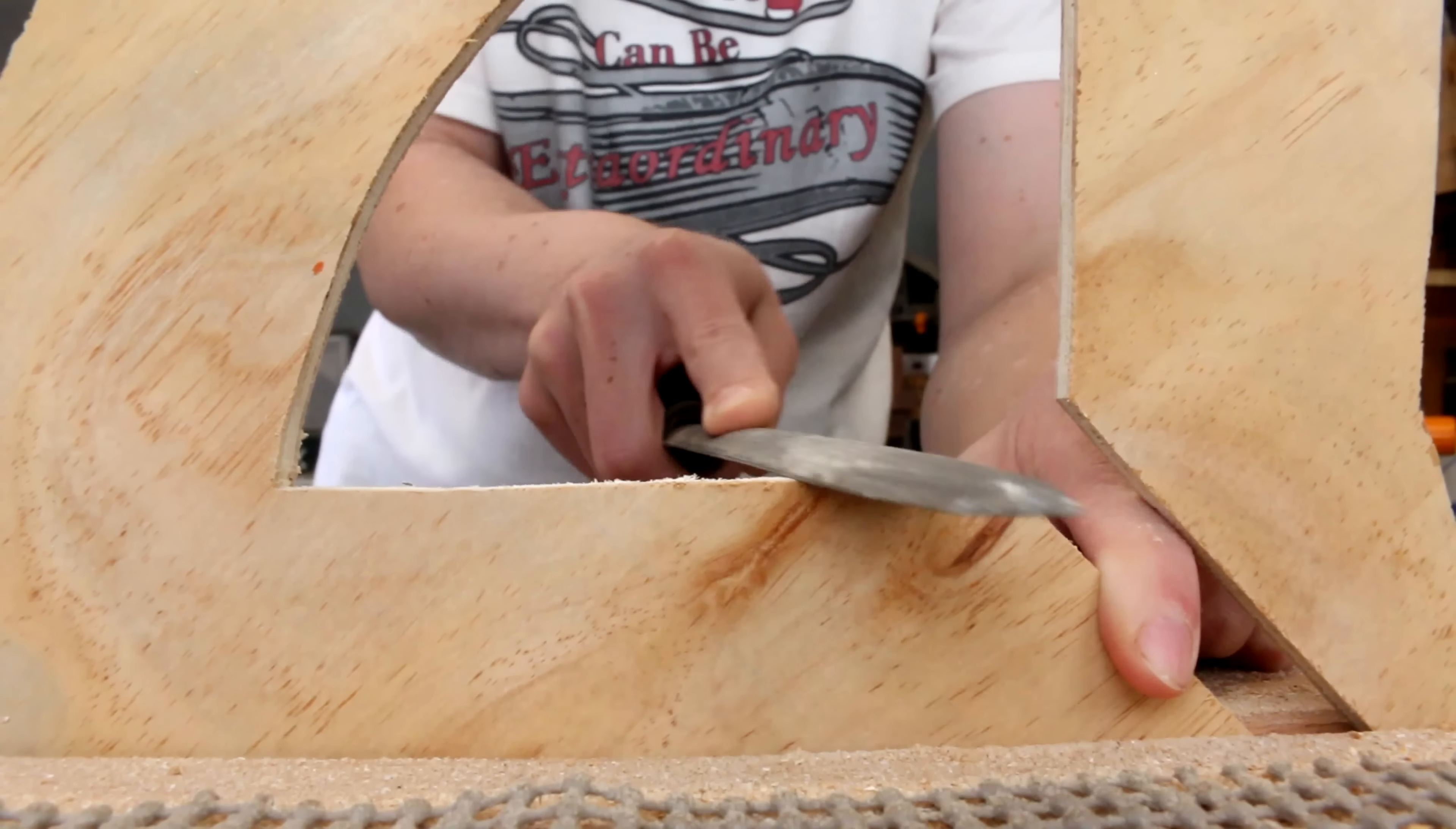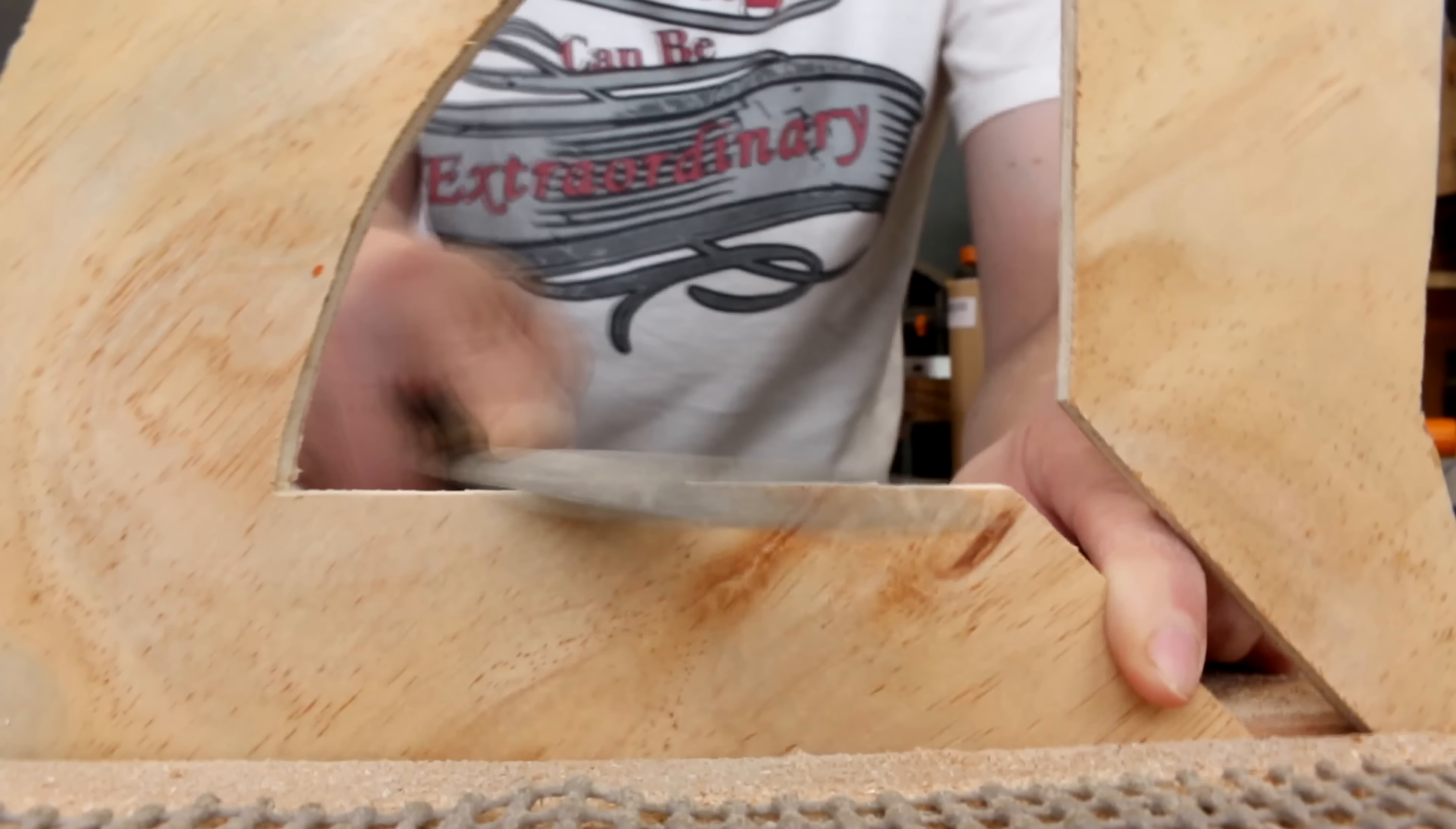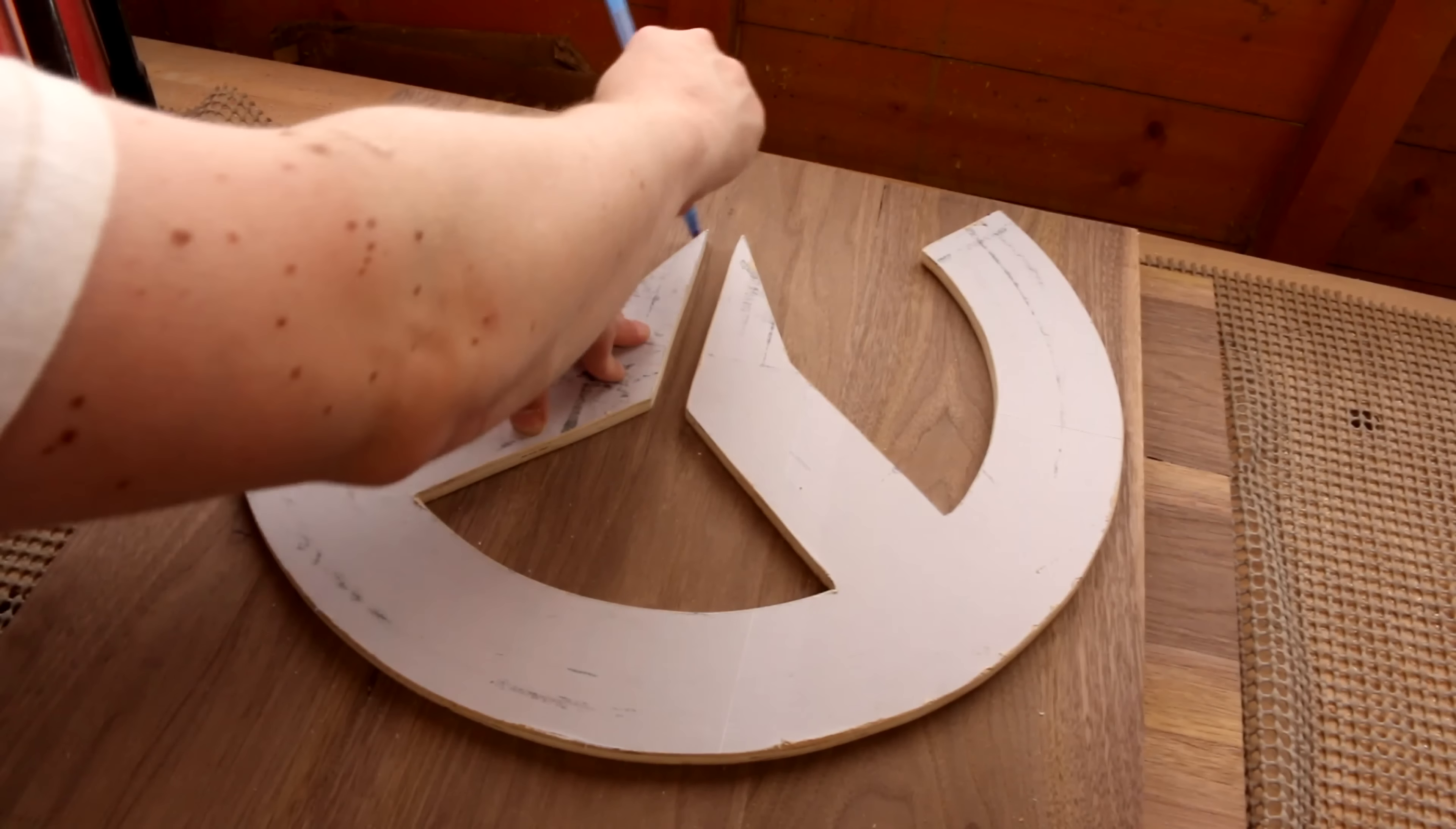Then I refined the shape with a file and some elbow grease. It's a lot easier to refine the shape of a thin template like this instead of the full thickness walnut. When I was happy with the shape, I traced around it onto my walnut board.